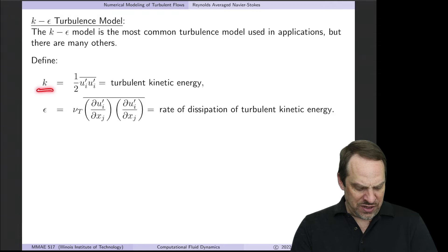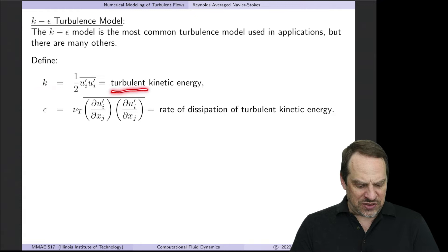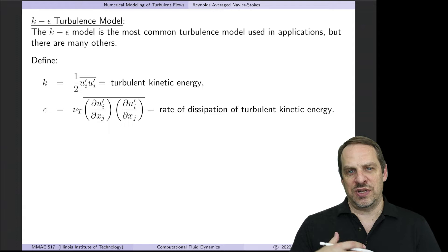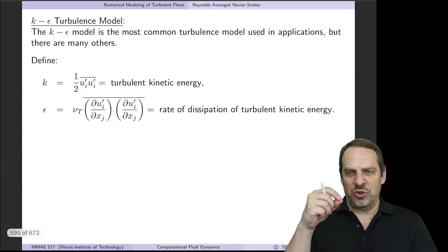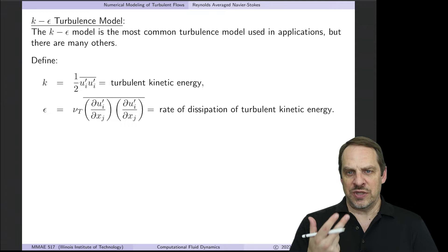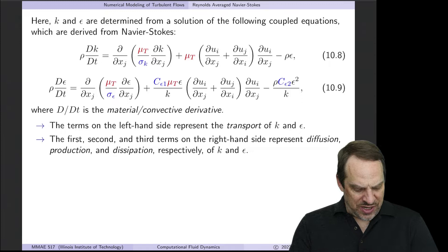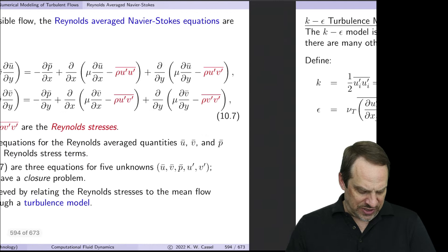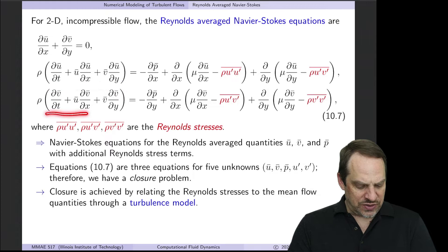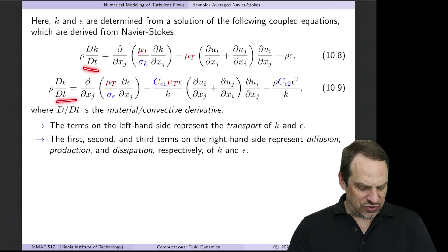The most common approach is called the k-epsilon model. It's also the simplest, which is why it's most common. It's a turbulence model for two variables, k and epsilon. Epsilon is the rate of dissipation of turbulent kinetic energy. The k is the turbulent kinetic energy, basically one-half velocity squared for the primed variables. So two additional field variables, the equations for which will enclose the system.